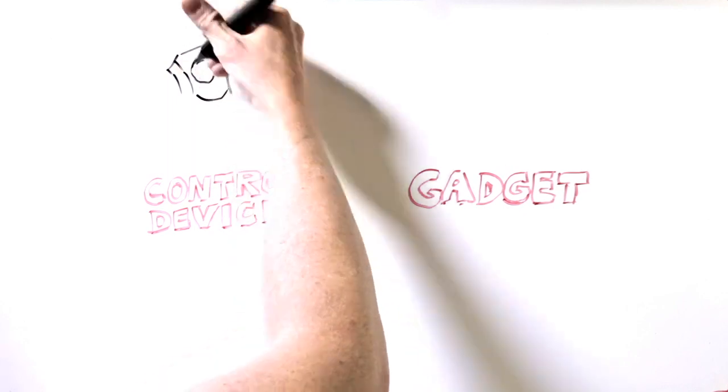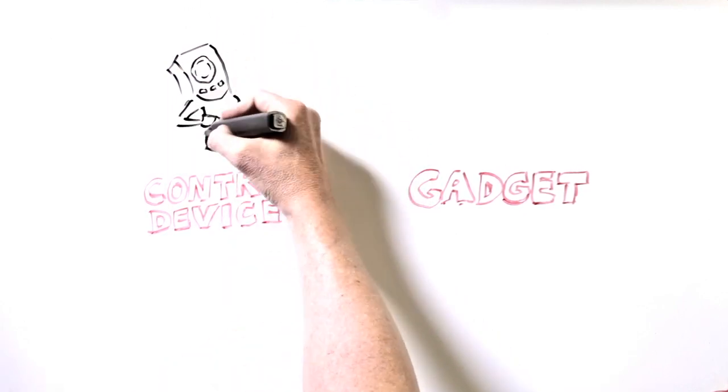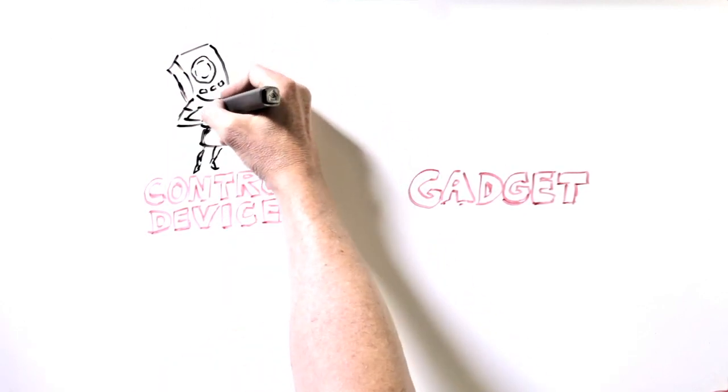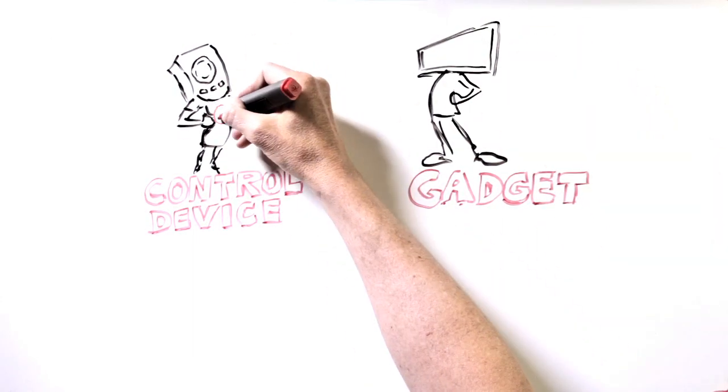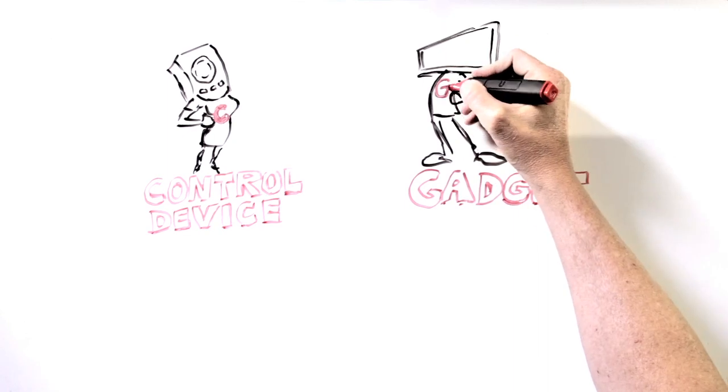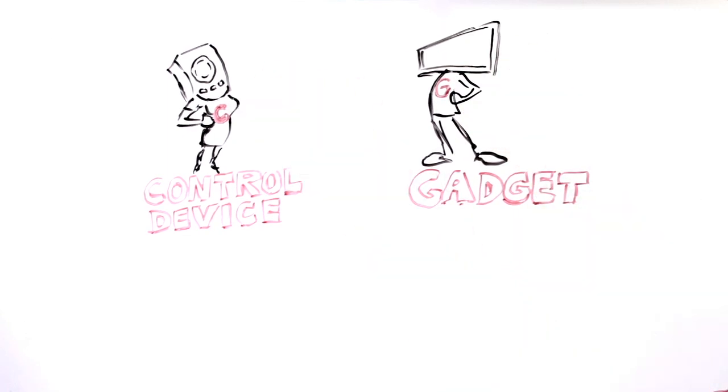For starters, we have to make sure that both the control device and each gadget can understand each other. Typically, each control device and gadget has its own unique communication language. To get them to understand each other, we need a piece of gear in between them called a processor.